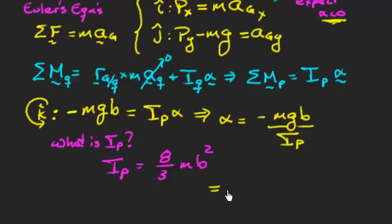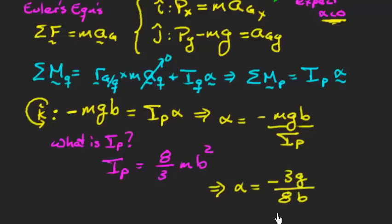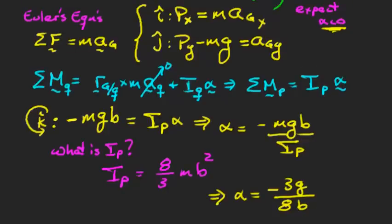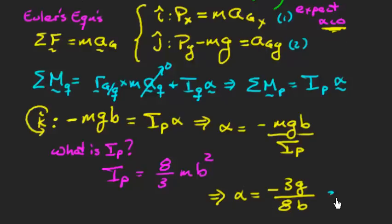Substituting I_P = (8/3)mb² into α = −mgb / I_P gives α = −3g / (8b). This is negative, confirming clockwise angular acceleration as expected. Now with alpha known, I need to use kinematic relationships to find the acceleration of the center of mass.